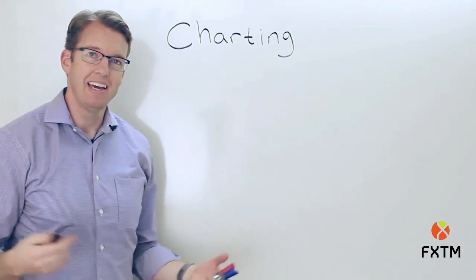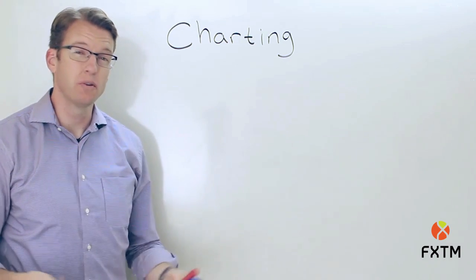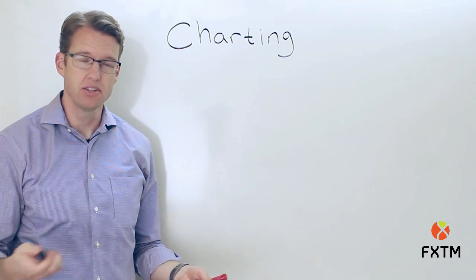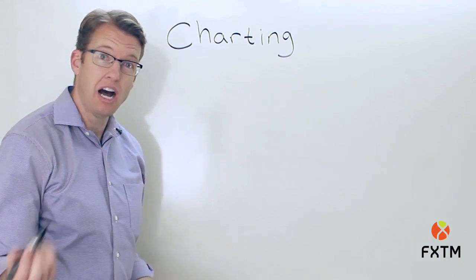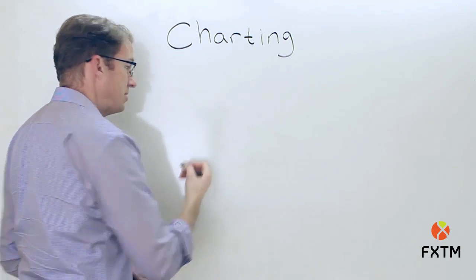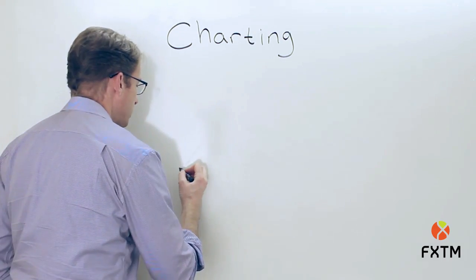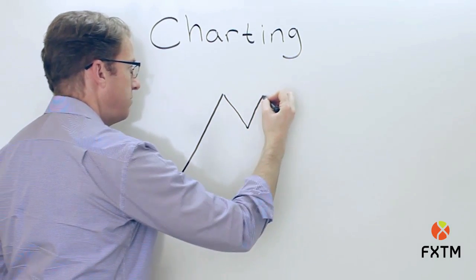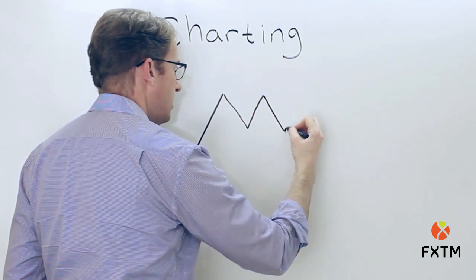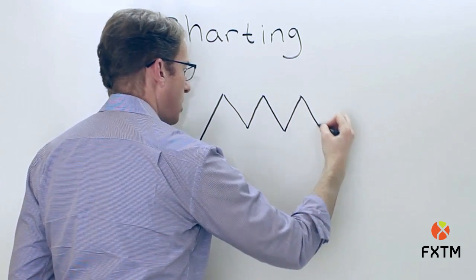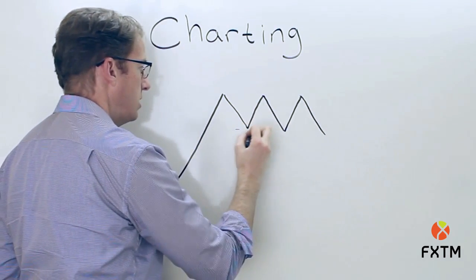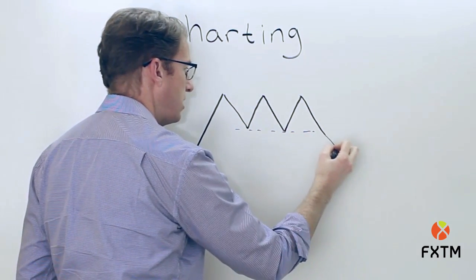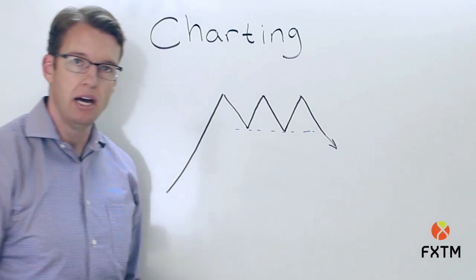Although it's very dramatic, a head and shoulders pattern is not the only reversal pattern that traders should be paying attention to. For example, a more common one that will appear from time to time is just a triple top. The only difference being that as the market forms those highs, they are roughly at the same height. So we don't have that prominent peak there in the middle as we do in a head and shoulders pattern. So that's a very common one, a very bearish price pattern.